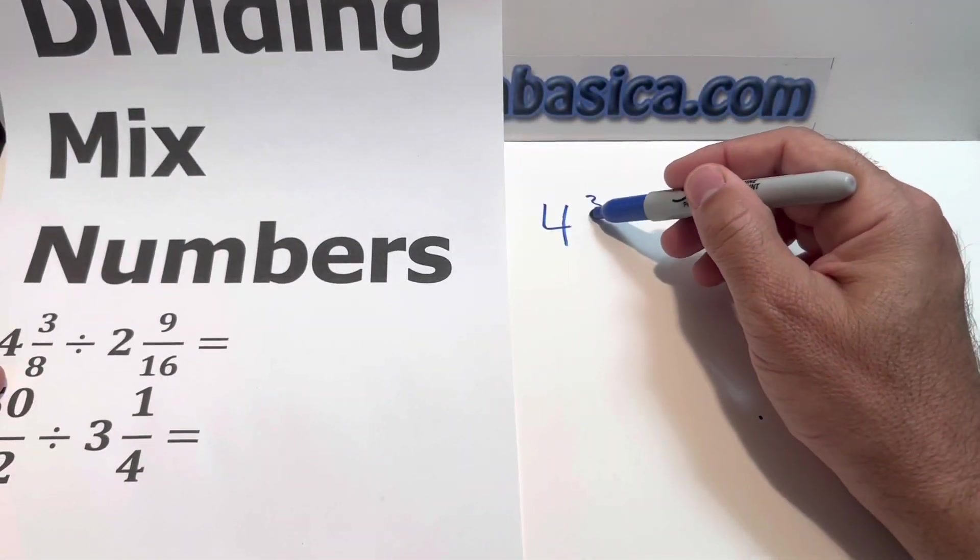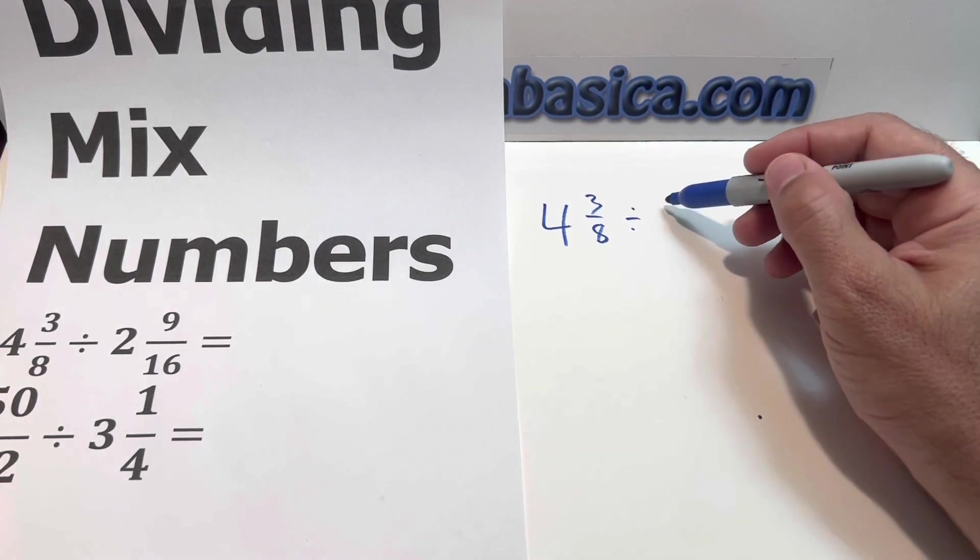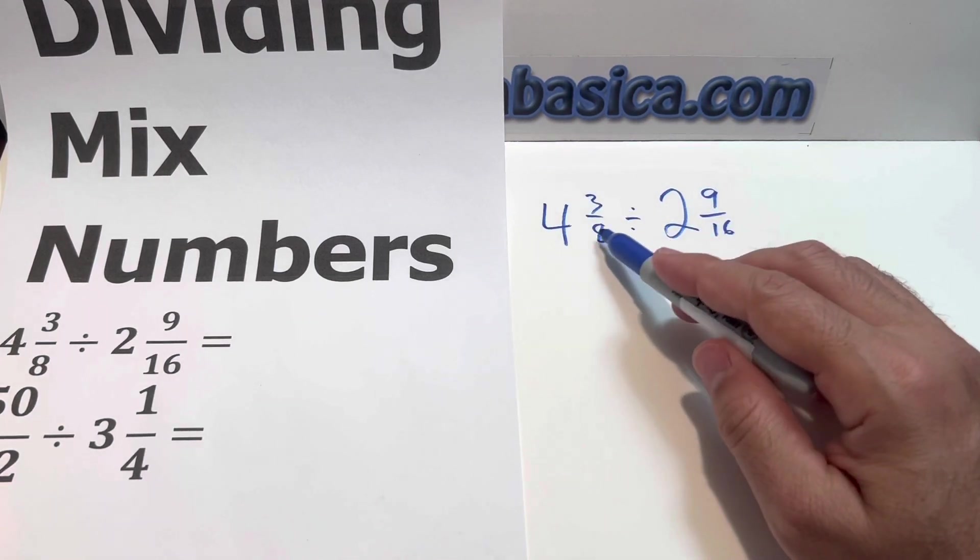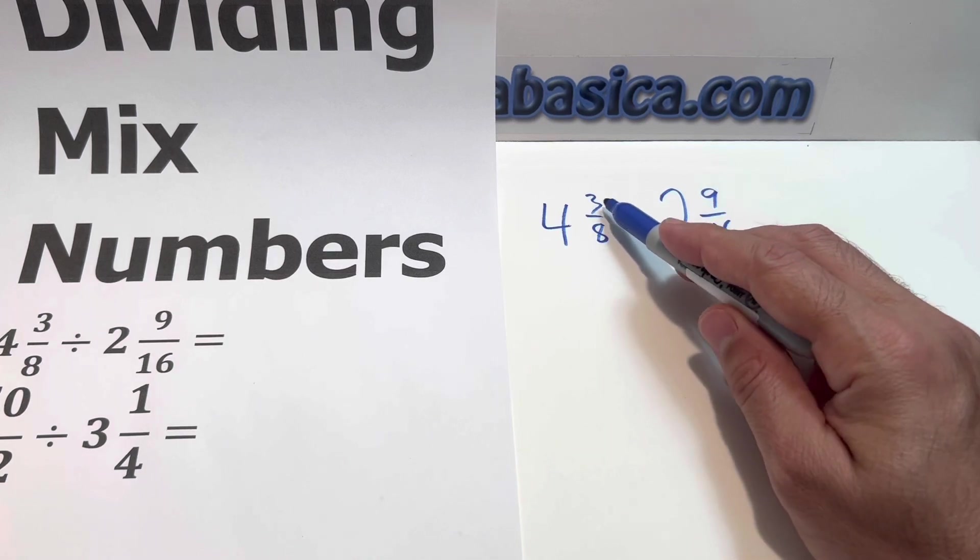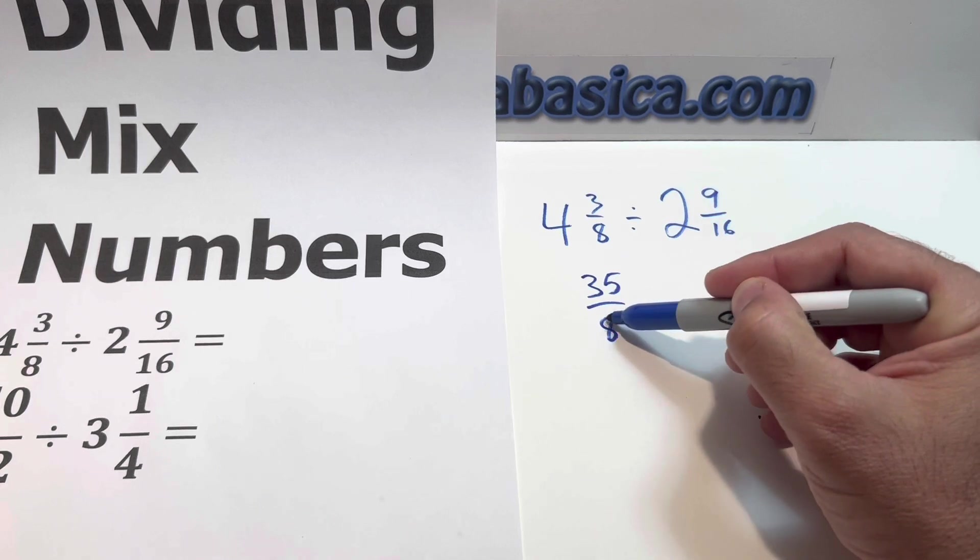4 and 3 over 8, divided by 2 and 9 over 16. So what we're going to do is first change it into a fraction. 4 times 8, 32 plus 3, 35. 35 divided by 8.